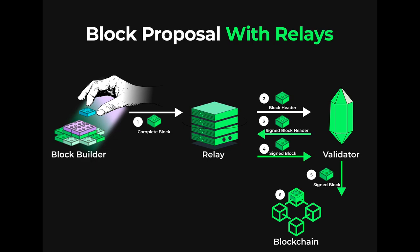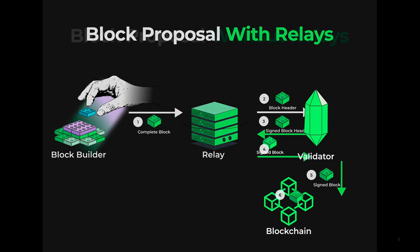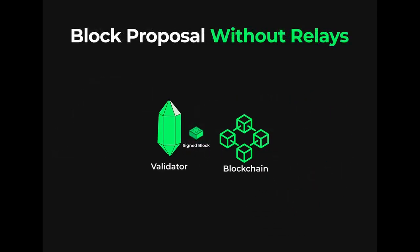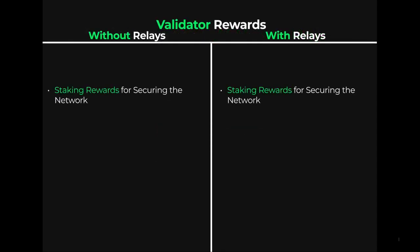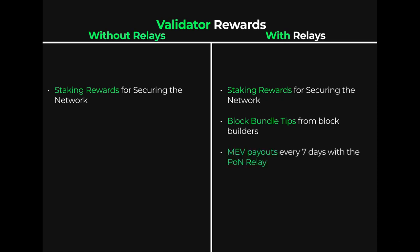Let's compare this to the block proposal process without a relay. There's a good reason that validators go through the trouble of working with relays though. With or without relays, validators are earning staking rewards, but with relays, validators can earn tips from block bundles. With the Proof of Neutrality relay, they will also collect recurring MEV payouts every seven days.